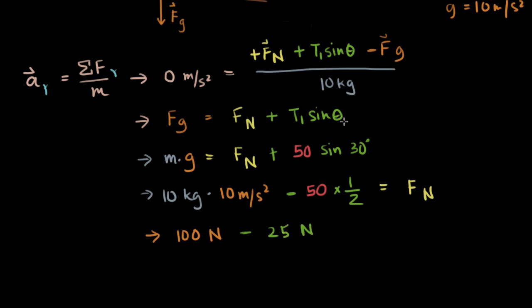Minus 50 times half, that is just 25 newtons, because this was a force, so force has the unit newtons. This equals 75 newtons, and that is the value, the magnitude of our normal force.